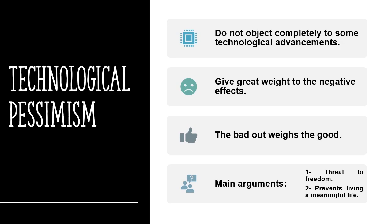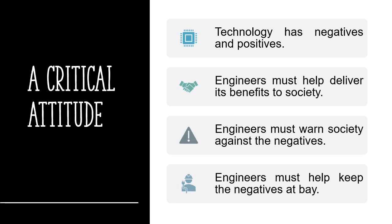Technological pessimism has two main arguments: the threat to freedom, where any type of personal violation is not acceptable, and the threat to living a meaningful life — as everything today becomes more and more digitized, people lose actual connection. Immediately jumping onto any new technology or dismissing any technology due to some side effects will either put society at risk or deny progress completely.